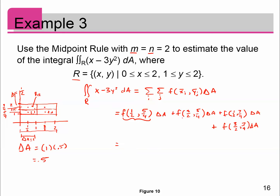Evaluating all of these in the function and plugging into a calculator, I get approximately negative 11.875. I plugged in (1/2, 5/4), multiplied by 0.5; (3/2, 5/4) multiplied by 0.5, and so on. So that's how you apply the midpoint rule. Now let's talk about how to do it by hand exactly — what is the technique for finding the exact integral, not an approximate value?